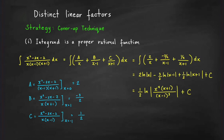To find constant c, cover the x plus 1 in the integrand. Evaluate the expression at the x that makes x plus 1 equal to 0, which is x equals negative 1. Plugging in, we get 1 plus 2 minus 2 in the numerator, giving 1 over negative 1 times negative 2, which equals positive 1 half. So c equals 1 half, and we now have the full partial fraction decomposition.